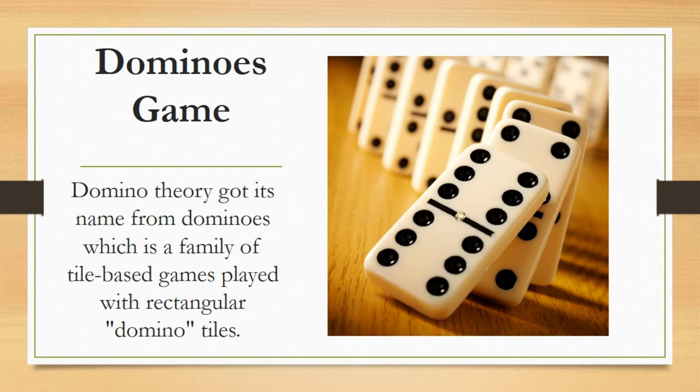As you can see in the picture, if these dominoes are placed in a row and one pushes the last domino, it will fall on the next one, and the next one will fall on the domino next to it, and so on. As a result, the whole row of dominoes will fall down. The same idea was presented in the Domino Theory.